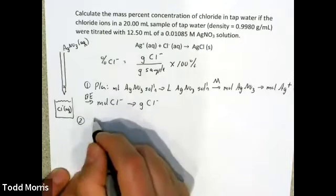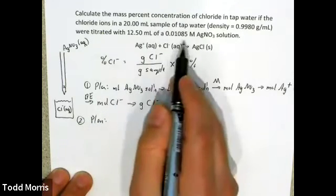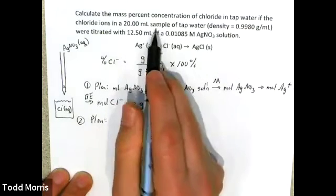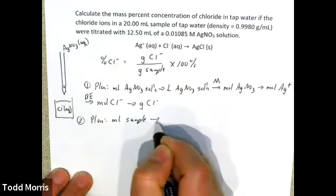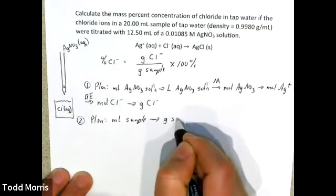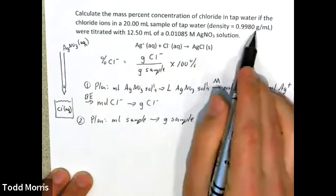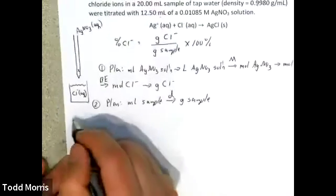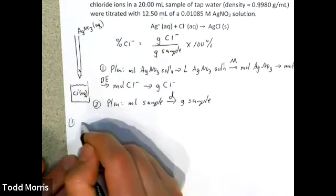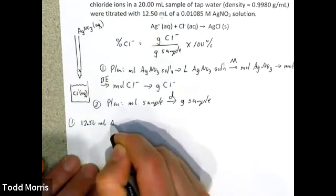The second part of the plan is to get grams of sample. I can do that from the volume of sample: milliliters of sample to grams of sample using the density as my conversion factor. So in the first part, we have 12.5 milliliters of silver nitrate solution — it's just a matter of doing the math.